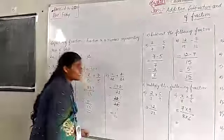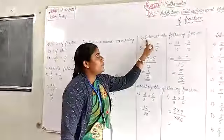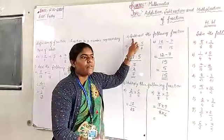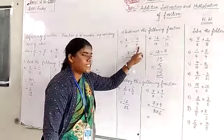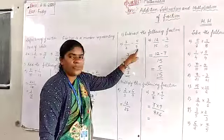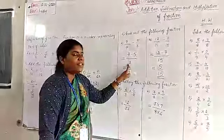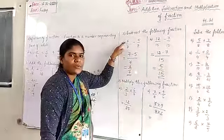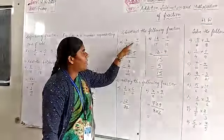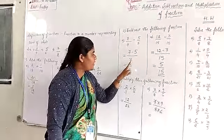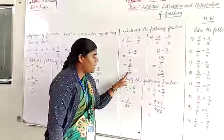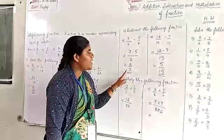Next, moving on to how to subtract the fraction. 7 by 7 minus 5 by 7. Here also denominator value same is there, 7 as is you write. Here numerator value first term, 7, minus 5. 7 minus 5 is how much? 2 divided by 7 is the answer.